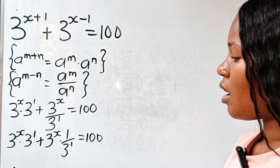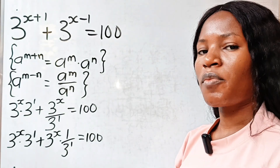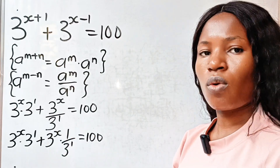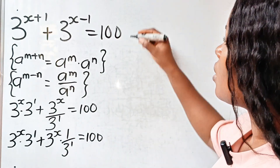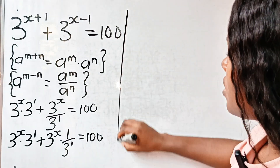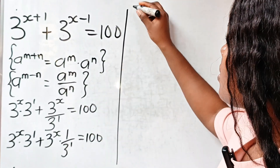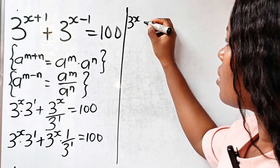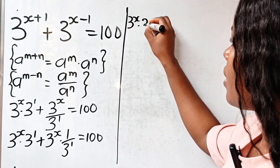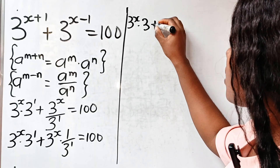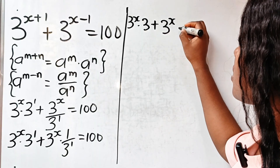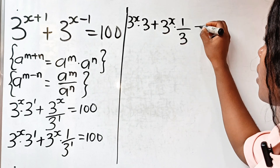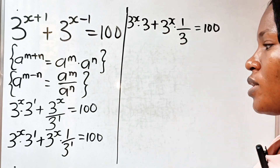Now at this point, remember that 3 to the power of 1 is equal to 3. That means we can write this as 3 to the power of x multiplied by 3, plus 3 to the power of x multiplied by 1 over 3, is equal to 100.